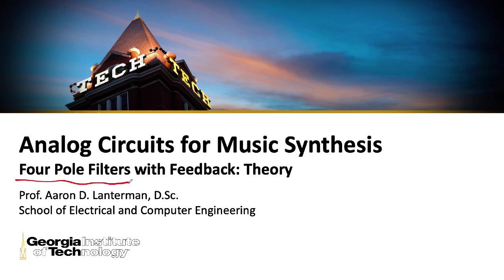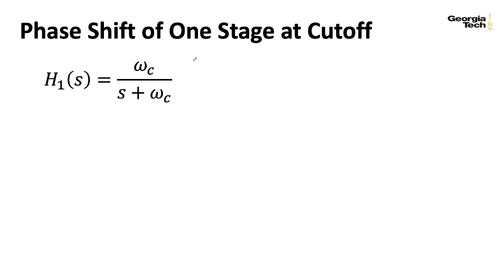So to get a handle on this, let's think about the one-pole filter transfer function for a second. Here's our usual low-pass transfer function, omega c over s plus omega c. Omega c is the half-power cutoff point in radians per second. You would divide by 2 pi to get that in hertz.